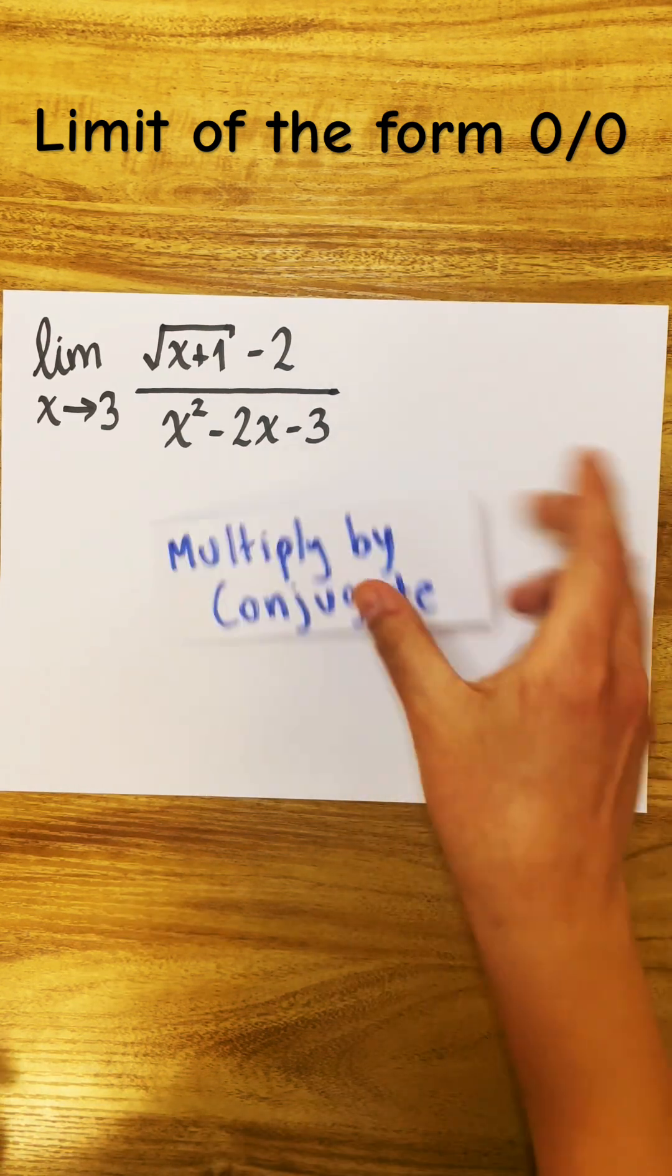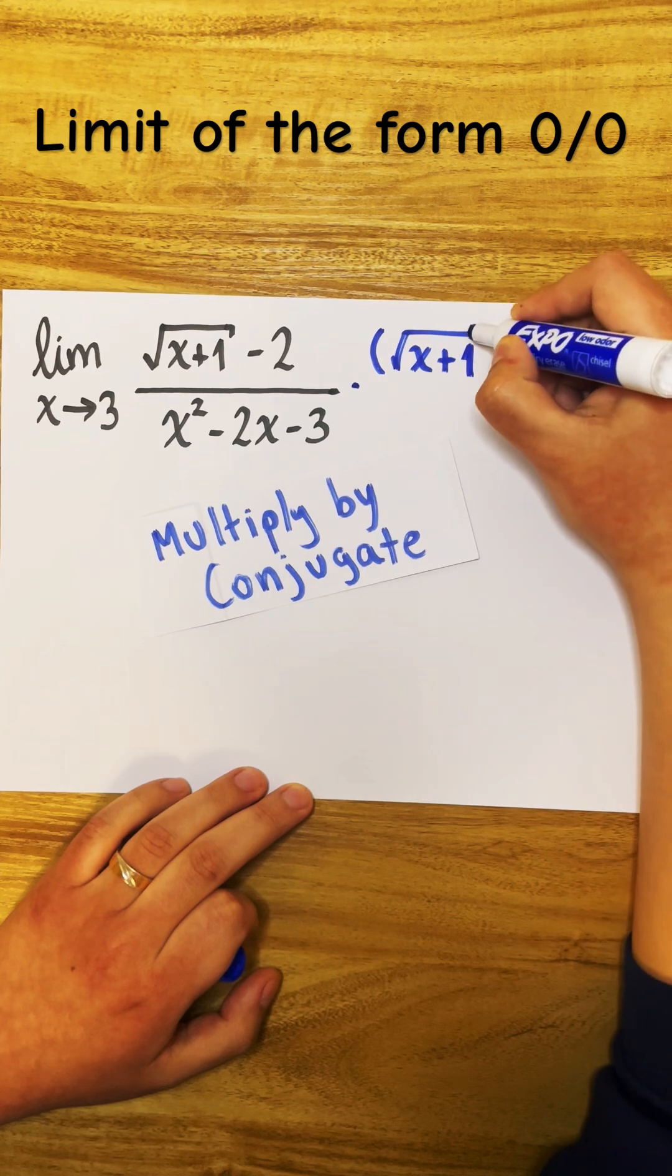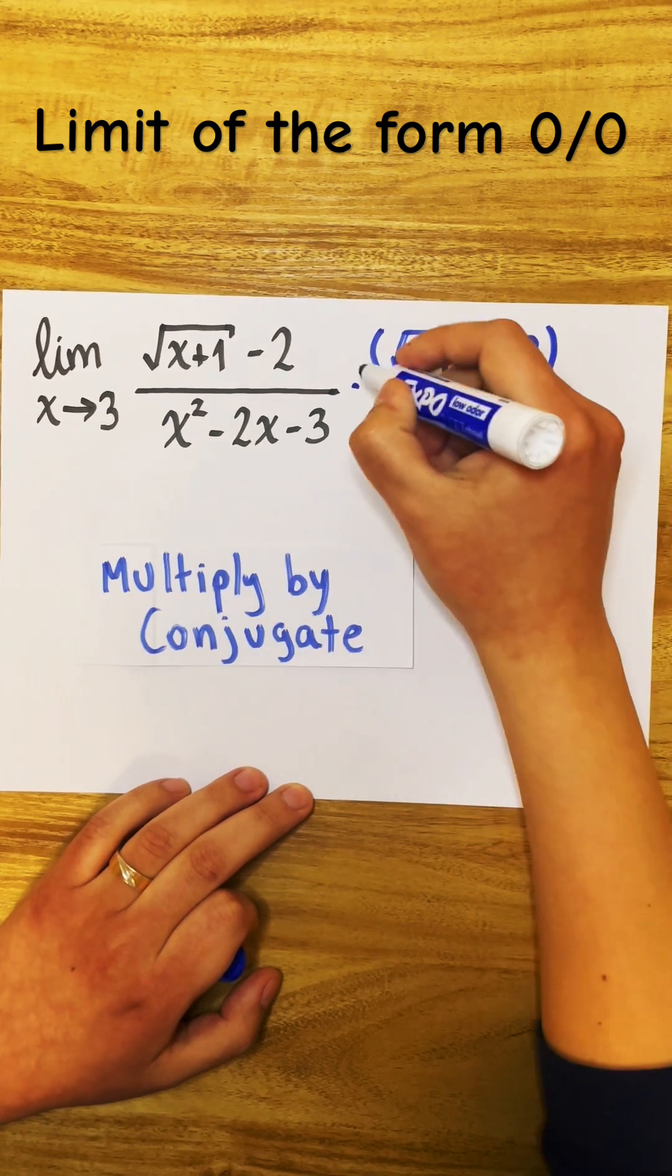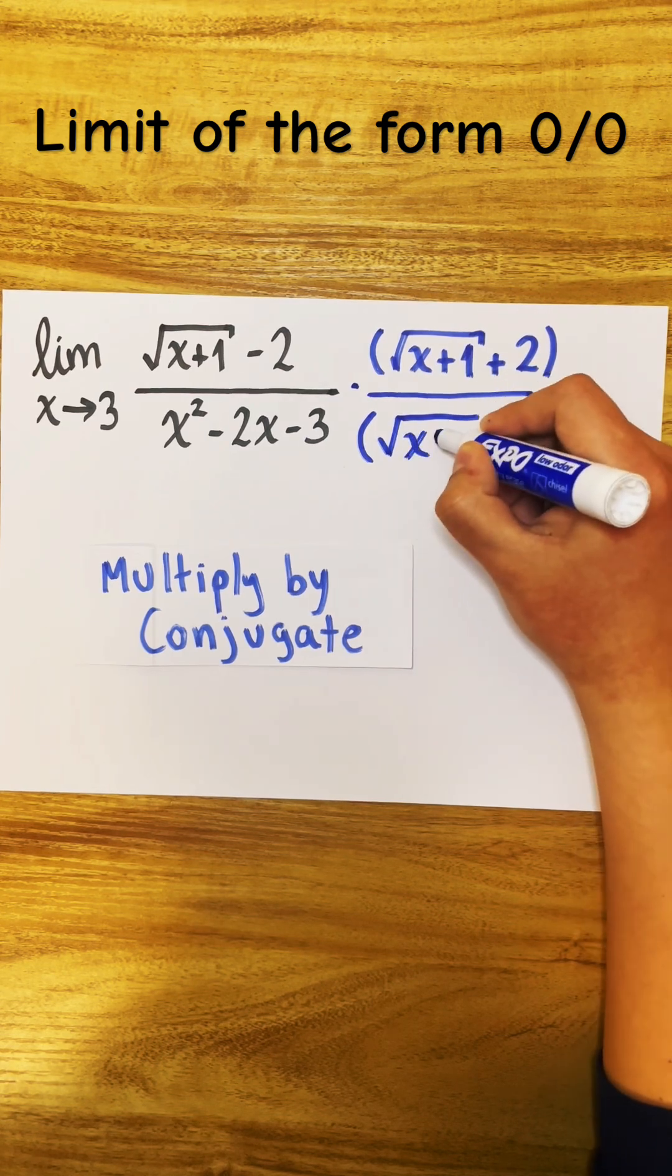In here, what we can do is multiply by the conjugate of the numerator, which is square root of x plus 1 plus 2. We have to divide by the same thing so that our expression doesn't change.